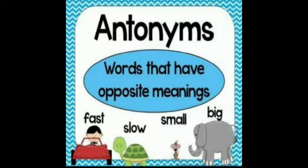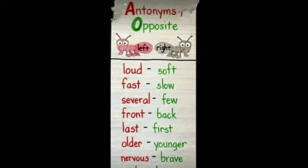Now we will see what are antonyms. Antonyms are words that have opposite meanings. The words that are opposite to each other are called antonyms. Such as fast and slow, small and big. These are examples of antonyms. Now we will see some examples of antonyms — opposite words.